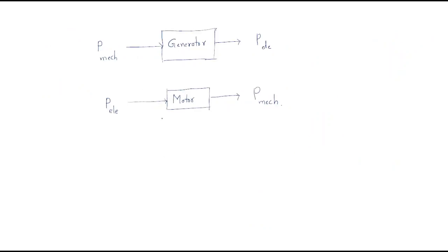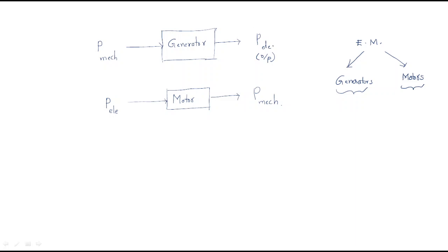Electrical machines are of two types: generators and motors. Both have almost the same construction and working principle, but they differ in their inputs and outputs. A generator, as the name suggests, generates electrical supply — its output is electrical power and it takes mechanical input.